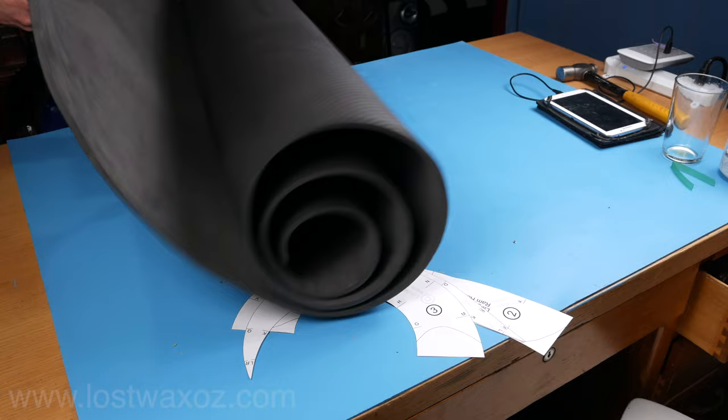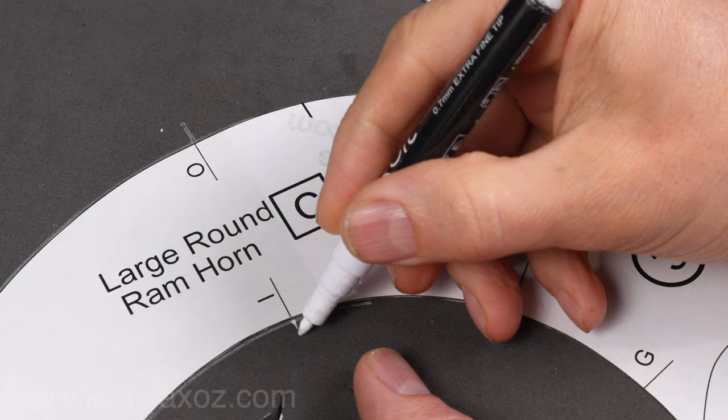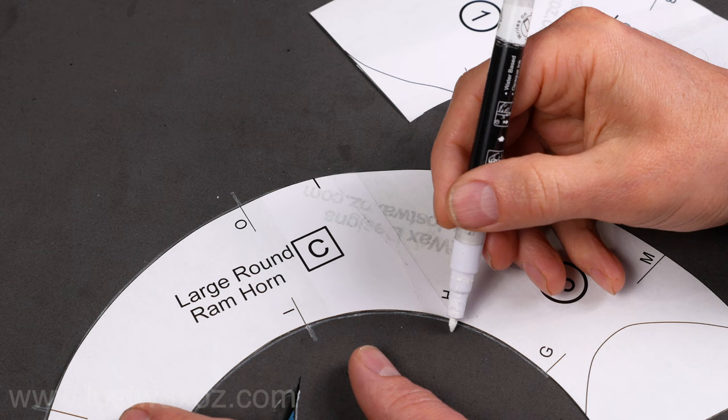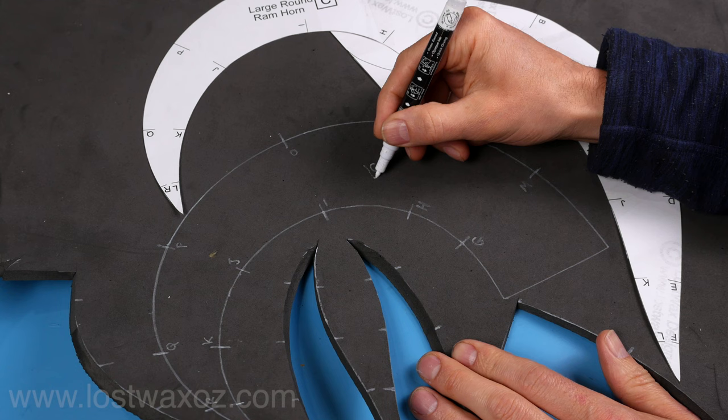Grab some 5 to 7 millimeter thick EVA foam and start tracing the pattern pieces onto the foam. I'm using my friendly acrylic paint pen here so that any lines I draw won't bleed through my final paint job. Make sure to mark all the alignment marks and then extend them to the inside of the pattern once you're done tracing. Oh, I guess I should mention which horn I'm making first. It's my favorite one, letter C, large round ram horn.